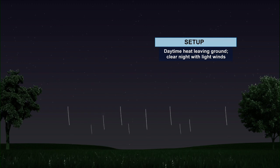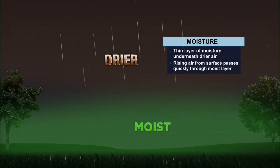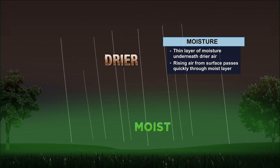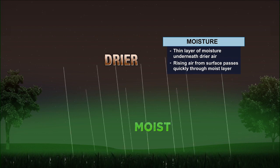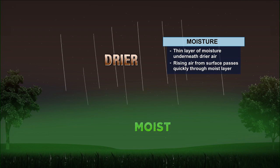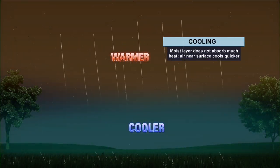The setup for radiation fog is daytime heat leaving the ground, a clear night with light winds — that's the exact same setup for radiational cooling. Then we look at the moisture: you have a thin layer of moisture underneath the drier air, and the rising air from the surface passes quickly through the moist air.